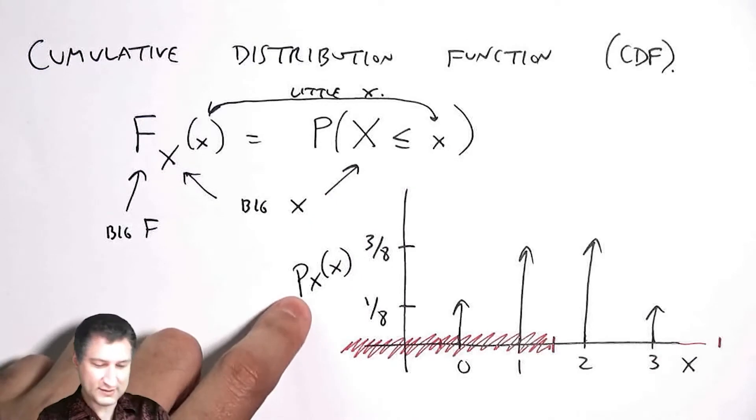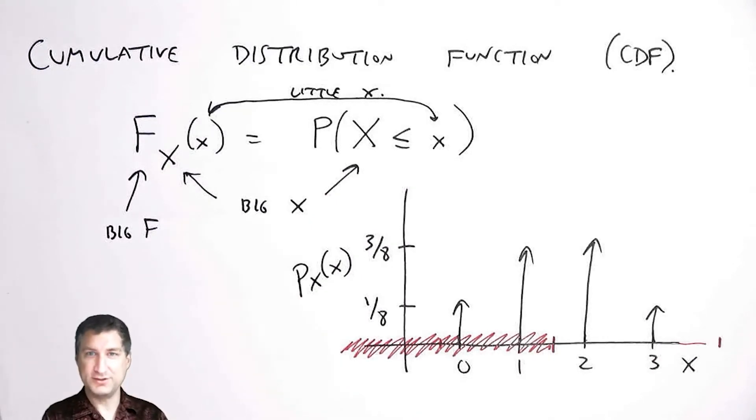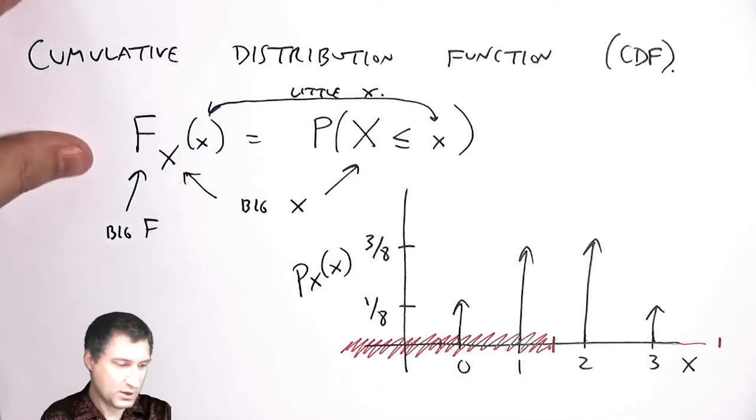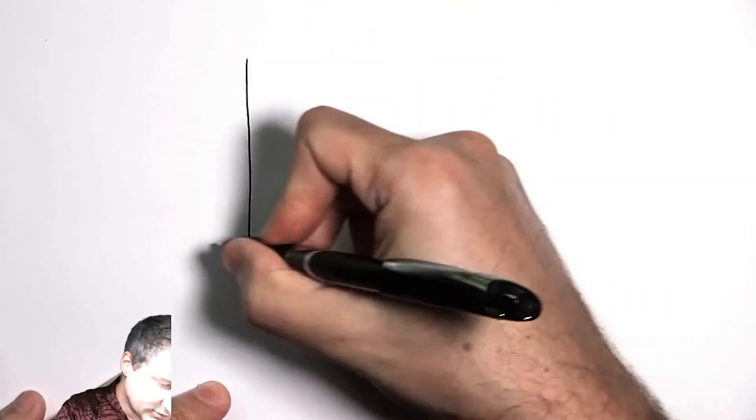You have to be careful what are you labeling your y-axis as. So here this is a PMF. What would the CDF for this be? Well, the CDF would look like the following: